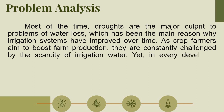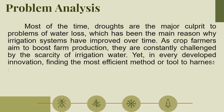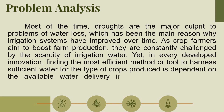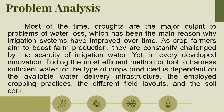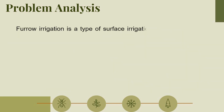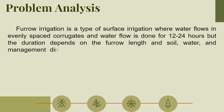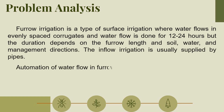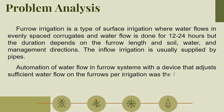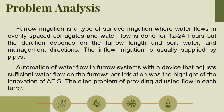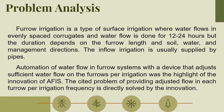As crop farmers aim to boost farm production, they are constantly challenged by the scarcity of irrigation water. Finding the most efficient method to harness sufficient water depends on the available water delivery infrastructure, the employed crop practices, the different field layouts, and the soil conditions of the area. Furrow irrigation is a type of surface irrigation where water flows in evenly spaced corrugates, and water flow is done for 12 to 24 hours, depending on furrow length, soil, water, and management conditions. Automation of water flow in furrow systems — with a device that adjusts sufficient water flow on the furrows per irrigation — was the highlight of AFIS innovation, directly solving the problem of providing adjusted flow in each furrow per irrigation frequency.